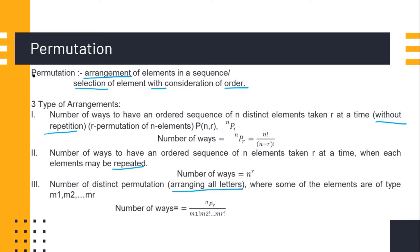There are 3 types of arrangement of elements. The first type is when you are arranging elements without considering any repetition of the same element — that is r permutation of n elements, which is the number of ways to have an ordered sequence of n distinct elements taken r at a time without repetition.